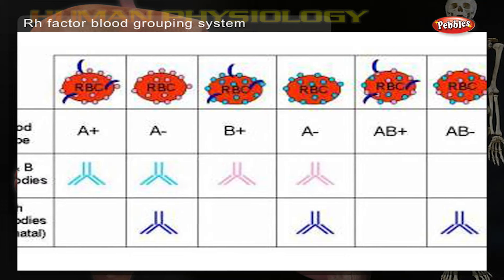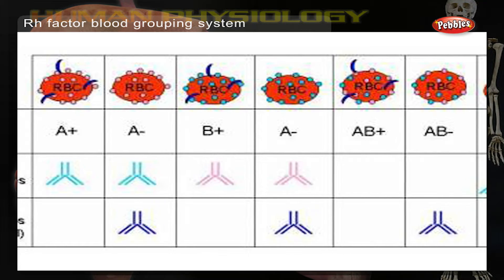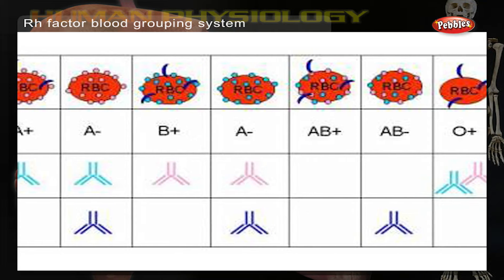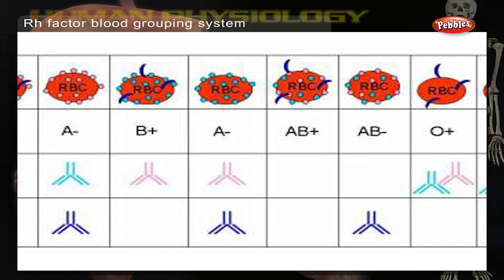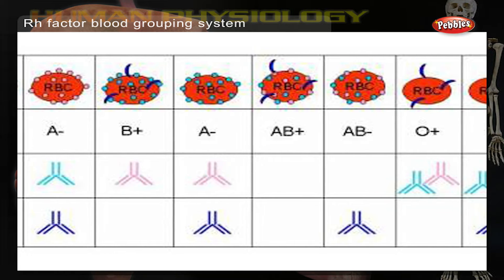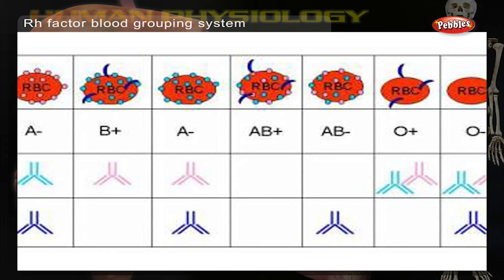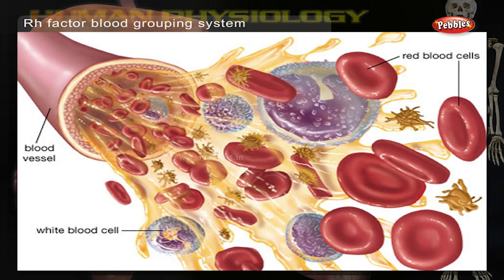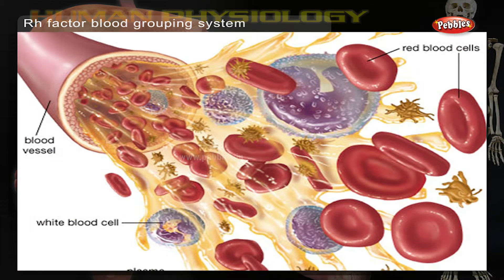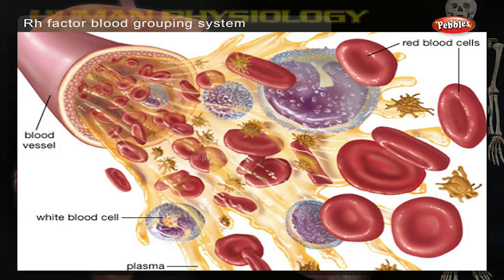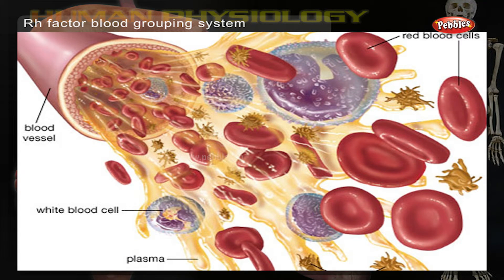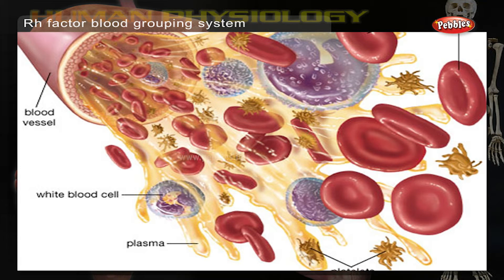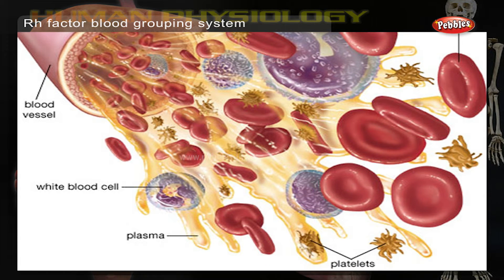Many people also have a so-called RH factor on the red blood cell's surface. This is also an antigen, and those who have it are called RH positive. Those who haven't are called RH negative. A person with RH negative blood does not have RH antibodies naturally in the blood plasma, but can develop RH antibodies if he or she receives blood from a person with RH positive blood, whose RH antigens can trigger the production of RH antibodies.